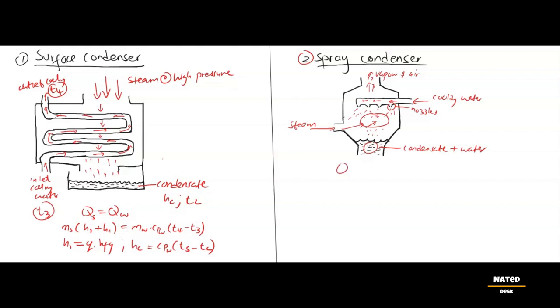7. Heat balance equation, where the heat emitted by the steam is equal to the heat absorbed by the water. Since the condensate mixes with cooling water, we won't be able to measure the condensate temperature Tc and subsequently Hc will be 0. ms·H1 = mw·cpw times the rise in temperature.